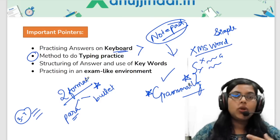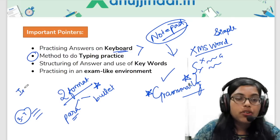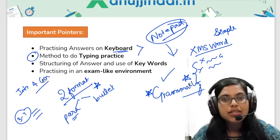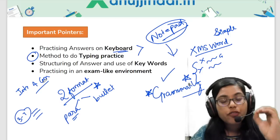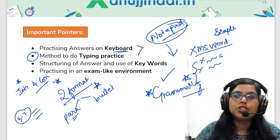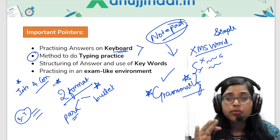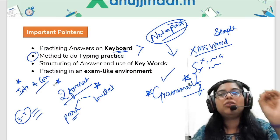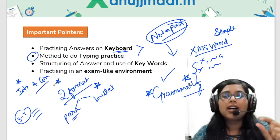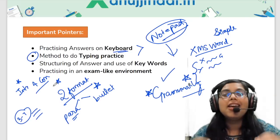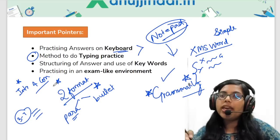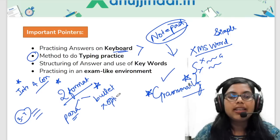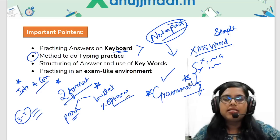Introduction, body, and conclusion — you all know how to structure an answer. What fetches you the mark is the introduction as well as the conclusion, because the body will more or less be the same across candidates' answers. Your introduction should be three to four lines or around 100 words, written in a crisp manner. If you have a very good pointer, always include it in your introduction. Your conclusion should be a short summarized version of your answer, and if possible, include one line that talks about the way forward. Refrain from writing any opinions unless otherwise asked.